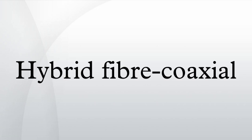Trunk coaxial cables are connected to the optical node and form a coaxial backbone to which smaller distribution cables connect. Trunk cables also carry AC power, which is added to the cable line at usually either 60 or 90 volts by a power supply and a power inserter. The power is added to the cable line so that optical nodes, trunk and distribution amplifiers do not need an individual external power source.